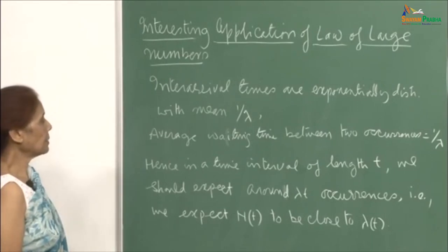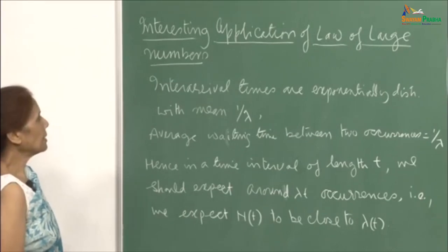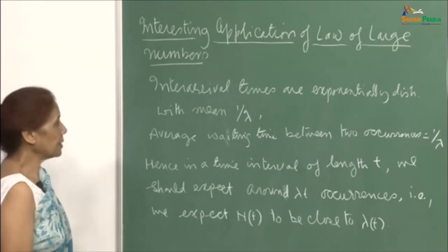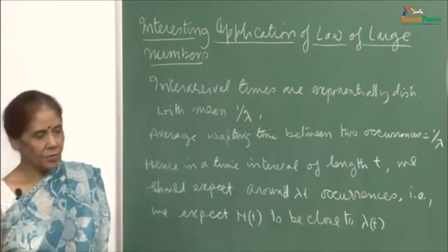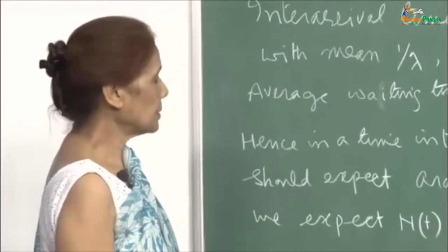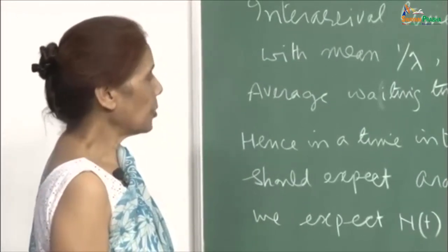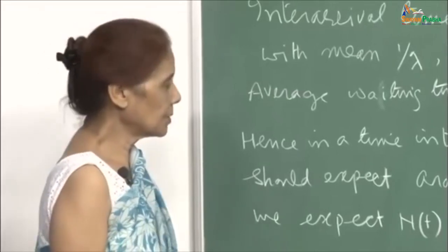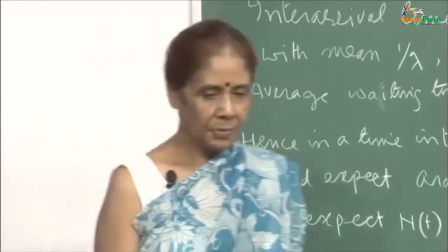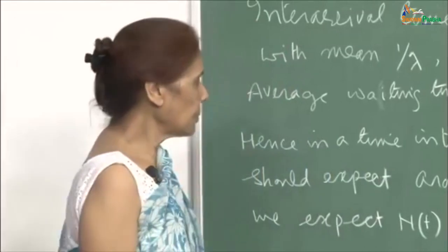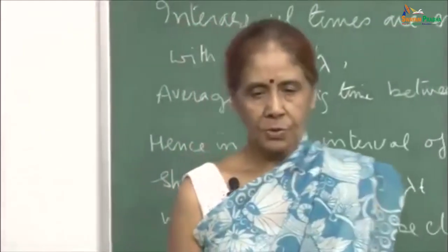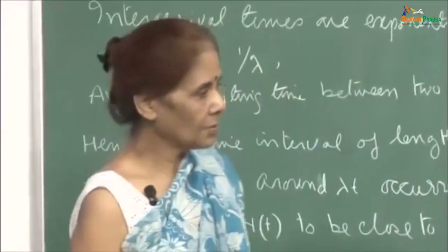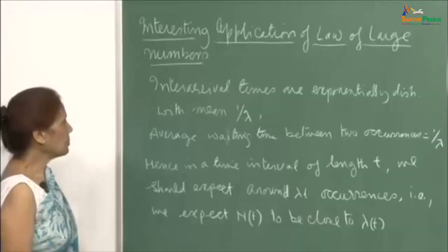I had to wait for this example to discuss it, because when we talked of the weak law of large numbers and strong law of large numbers, I had not talked about the Poisson process. So I waited till I had introduced the topic of Poisson process to give you this example. In fact, when we were talking of law of large numbers, I had shown you some examples, and this is also one of those interesting examples.